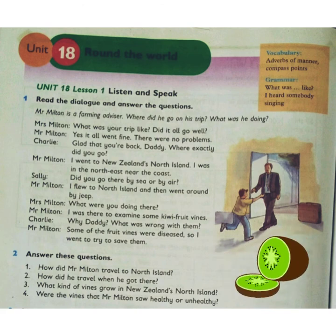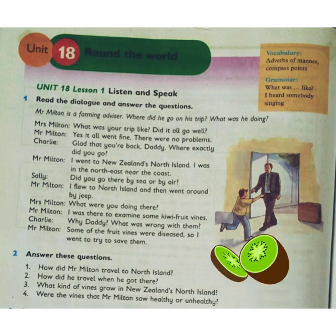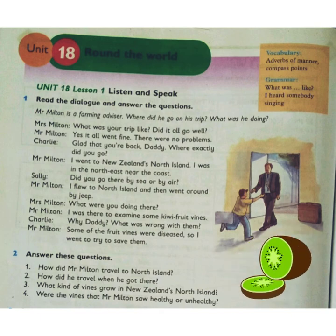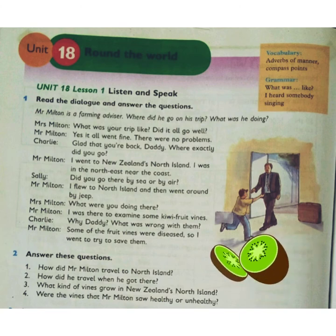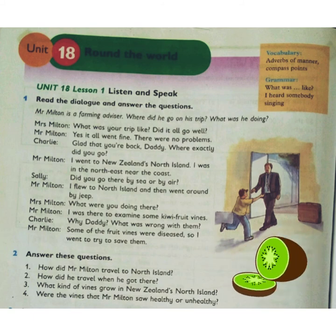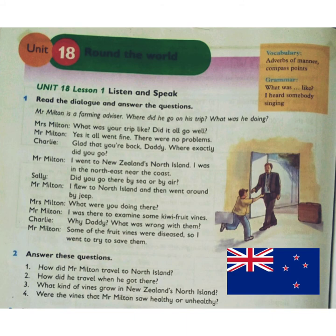Mrs. Milton asked again, 'What were you doing there?' Mr. Milton replied, 'I was there to examine some kiwi fruit vines.' All the products located in New Zealand are known as kiwi — the people of New Zealand are also called kiwi, and they are also known as Black Caps. Charlie asked, 'Why, daddy? What was wrong with them?' Mr. Milton replied, 'Some of the fruit vines were diseased, so I went to try to save them. As a farming advisor, I was responsible for giving consultancy on how to recover the fruit vines from that disease.'